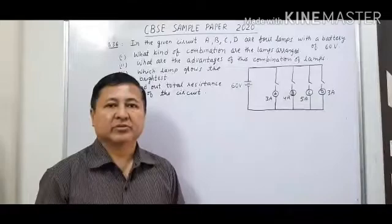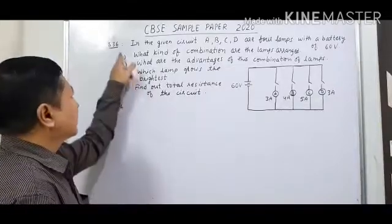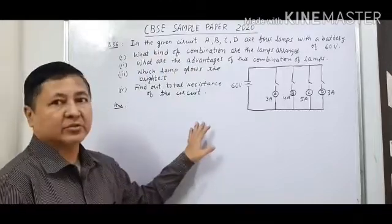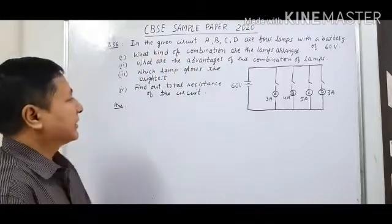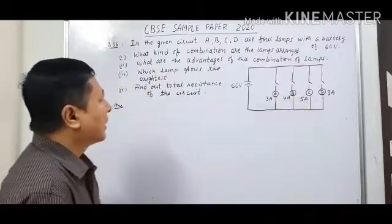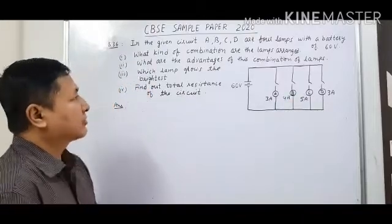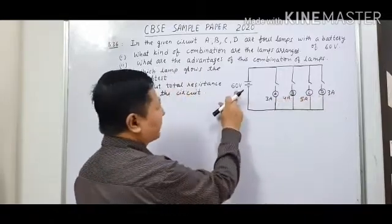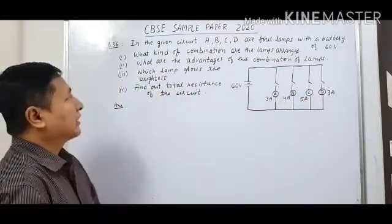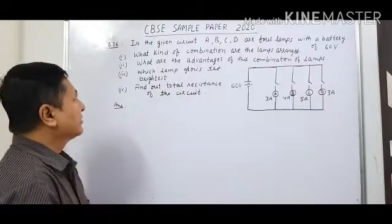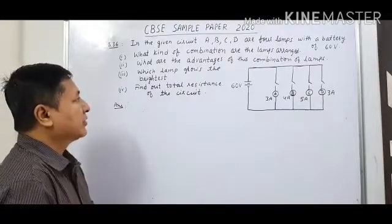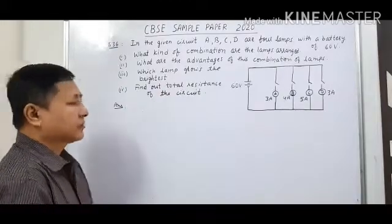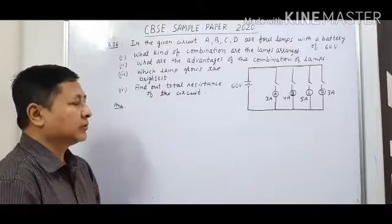Now let us solve the next question, question 36 of the CVAC sample paper 2020. This is a 5-mark question. In the given circuit ABCD, there are 4 lamps with a battery of 60 volt. The sub-questions are: what kind of combination are the lamps arranged in, what are the advantages, which lamp glows brightest, and find the total resistance.